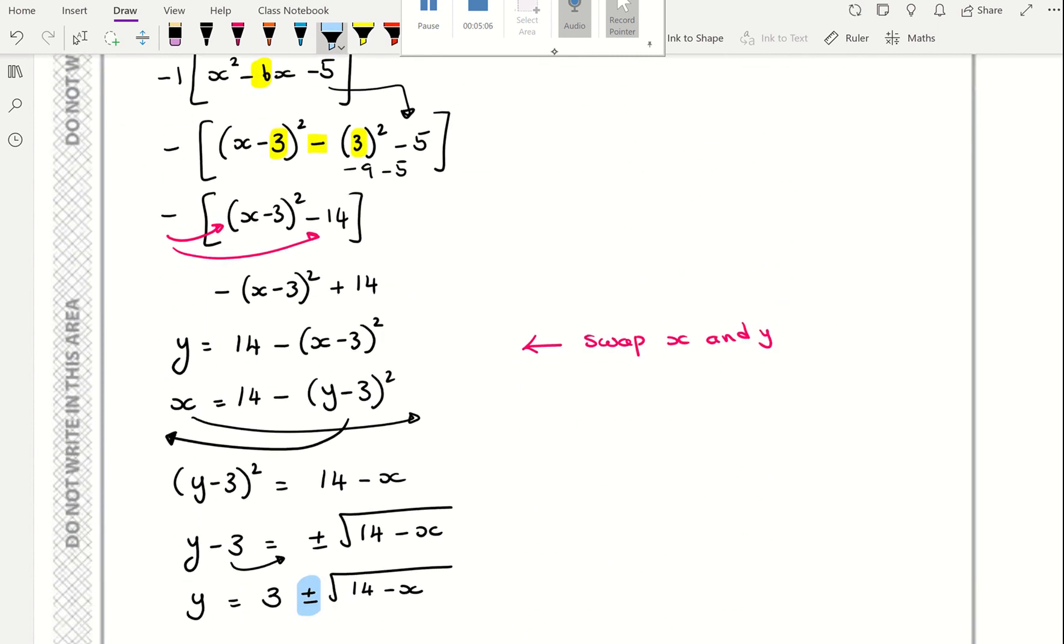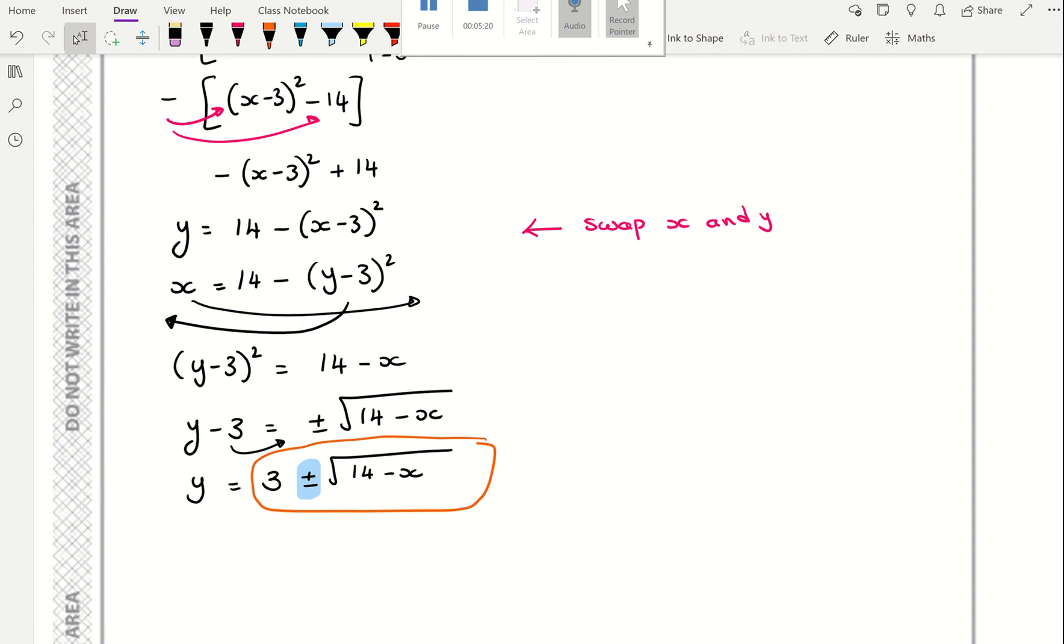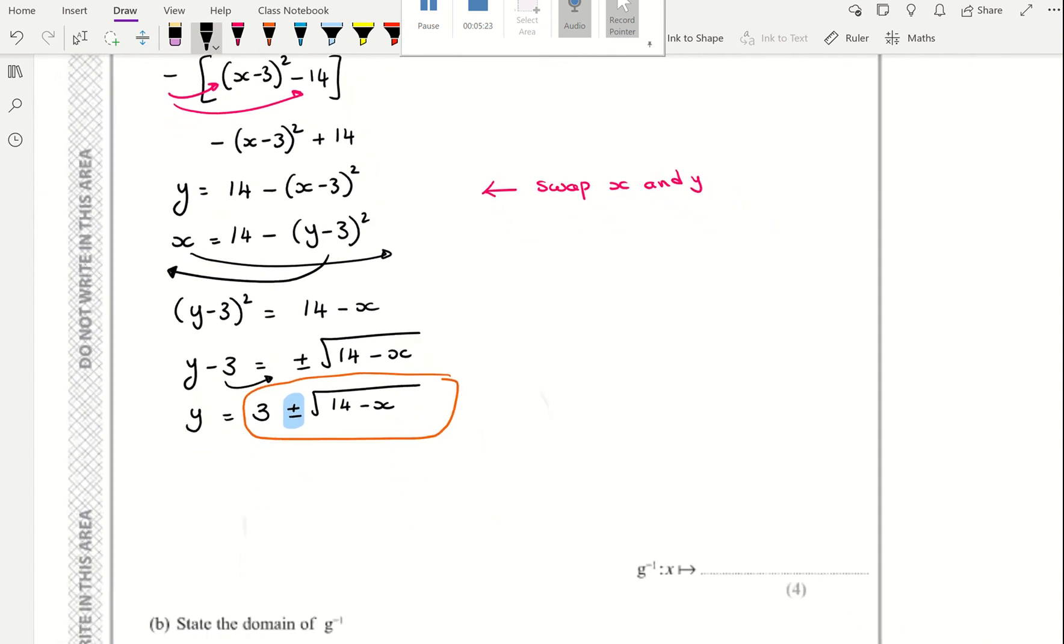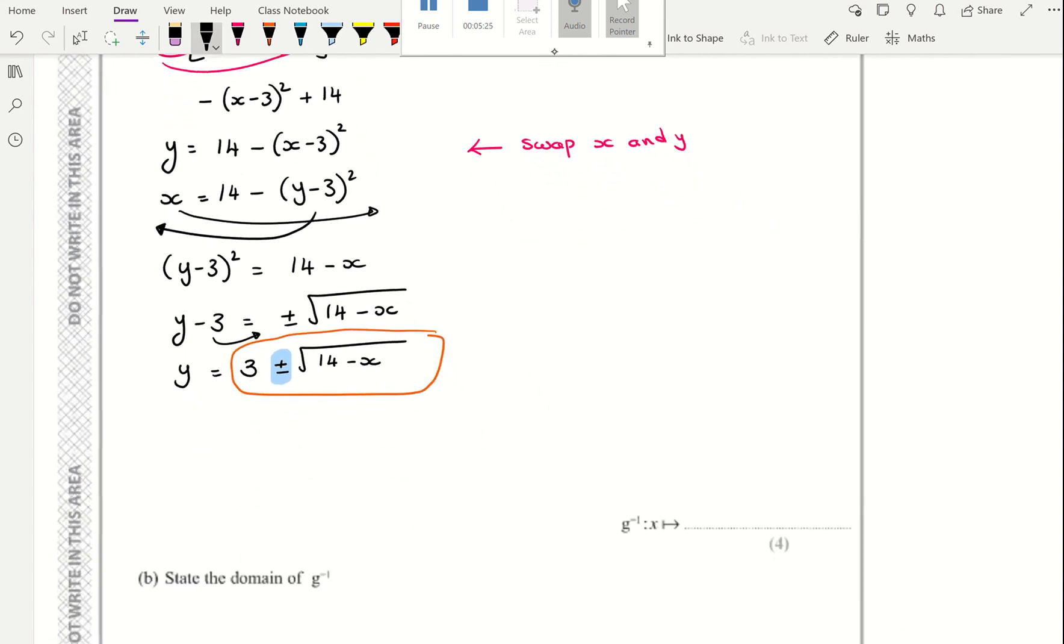If I want this to be bigger than 3, my answer is not going to be 3 minus anything. It has to be 3 plus the square root of 14 minus x. So you have to choose an answer. You cannot leave it as plus or minus. So it's 3 plus root 14 minus x.